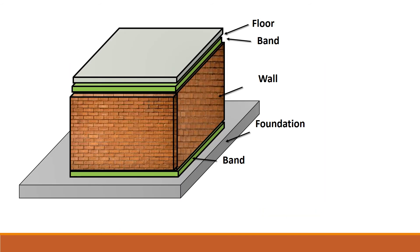A good masonry construction designed for earthquake resistance would have a foundation connected to the wall through a band. The walls are interconnected with each other, then the wall is connected to the floor through a band, and the floor is then interconnected with other walls above it in the top stories. This is an ideal earthquake resistant design principle that needs to be adopted in masonry construction.